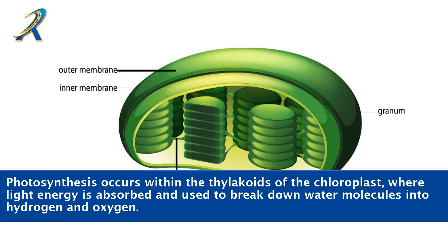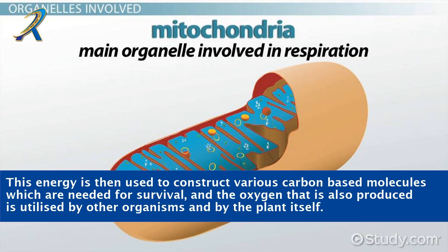Photosynthesis occurs within the thylakoids of the chloroplast, where light energy is absorbed and used to break down water molecules into hydrogen and oxygen. This energy is then used to construct various carbon-based molecules which are needed for survival, and the oxygen that is also produced is utilized by other organisms and by the plant itself.